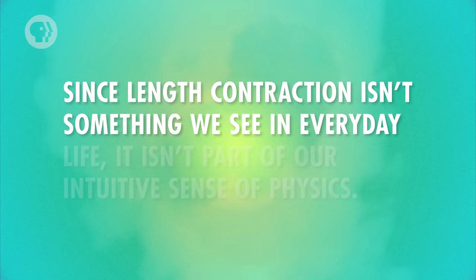Length contraction happens for objects moving at regular speeds too, but it's so tiny that there's no way you'd ever notice it. If the train was moving at 150 kilometers per hour, it would contract by less than a picometer — that's a hundredth of the length of a hydrogen atom. Since length contraction isn't something we see in everyday life, it isn't part of our intuitive sense of physics. So Special Relativity tells us that because light always travels at the same speed, time dilates and length contracts to compensate.